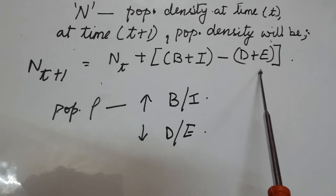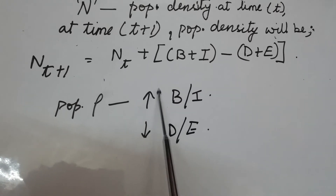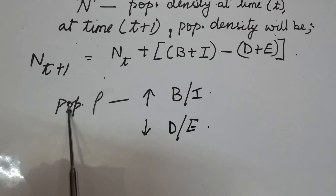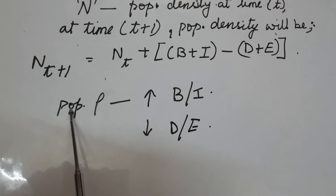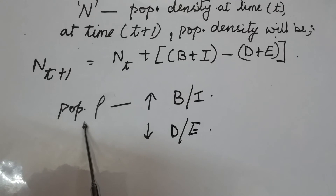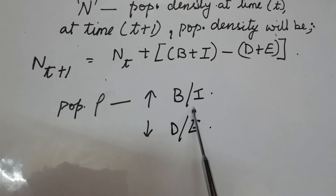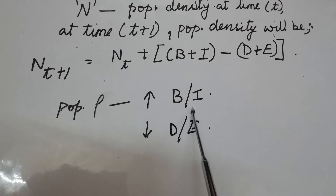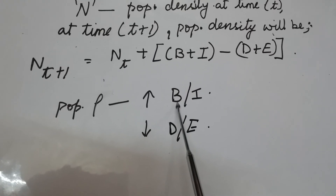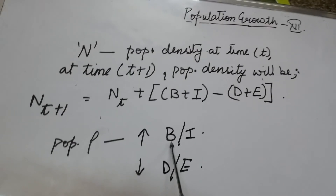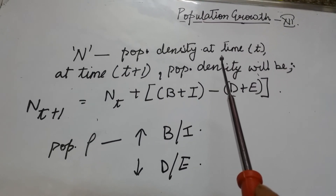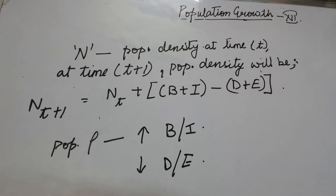Thus, under normal conditions, births and deaths are the two most important factors that influence population density. However, if a new habitat is being colonized, then immigration will contribute more significantly to population growth than the birth rate. That's all with population growth — in the next video, we will learn about growth models.